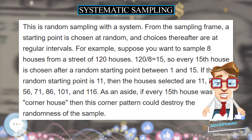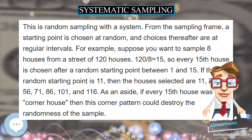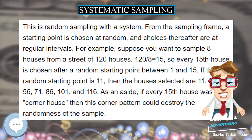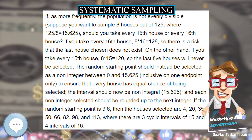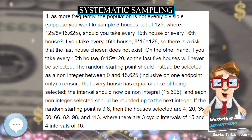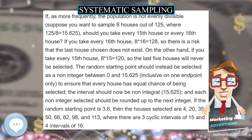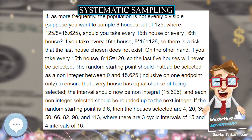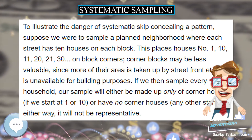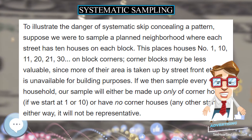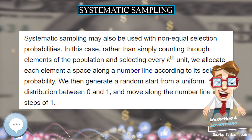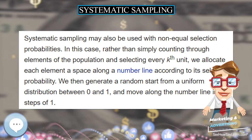26, 41, 56, 71, 86, 101, and 116. As an aside, if every 15th house was a corner house, then this corner pattern could destroy the randomness of the sample.